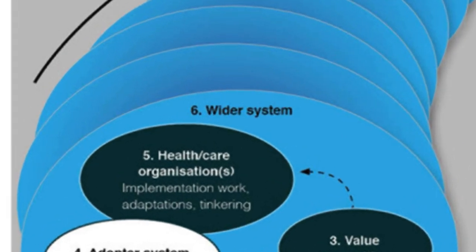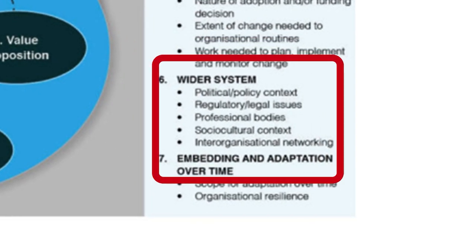The wider system domain introduces additional layers of complexity: the political and policy context, regulatory and legal hurdles, professional bodies, press and public opinion, and the need for inter-organisational networking. If there's policy push, wide support and extensive networking among adopting organisations, this domain is likely to come up as simple or complicated. But if it's politically tricky, with lots of regulation, legal hurdles and weak inter-organisational networking, this domain will come up as a lot more complex. A quick example: video consultations in the UK took a really long time to set up payment structures, which added a lot of complexity.